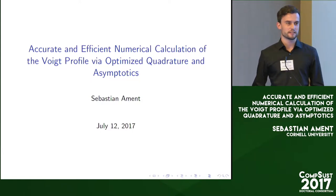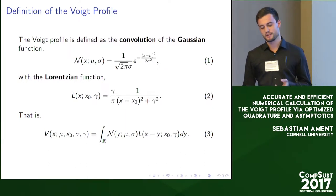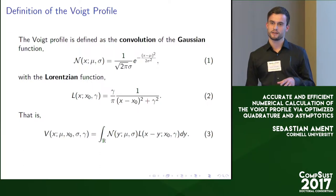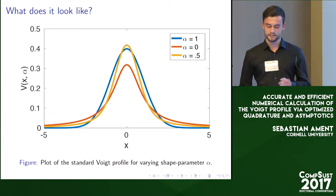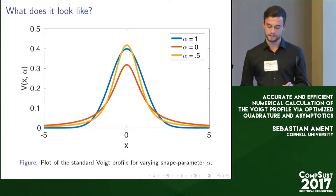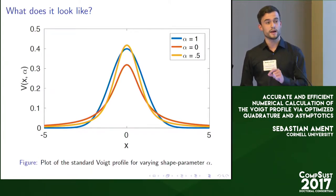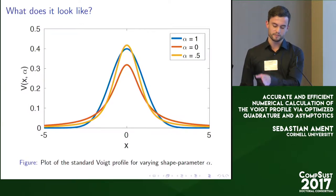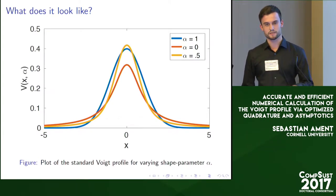It's about the numerical calculation of the Voigt profile. So first of all, what is the Voigt profile? It's defined as the convolution of a Gaussian function and a Lorentzian function, which we also know as the Cauchy distribution. What does it look like? Here you can see three functions plotted. The blue one is a Gaussian, the red one is a Lorentzian, and the yellow one is the convolution of both. You can see that it has quite a different profile — a higher maximum at the mode. It falls off in the intermediate values like a Gaussian function, and then asymptotically approaches the decay of the Lorentzian, 1 over x squared.